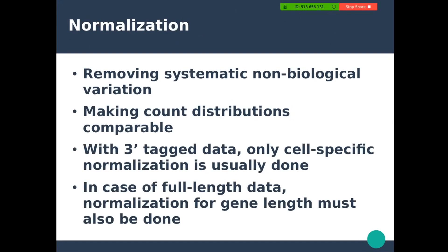In normalization we aim to remove non-biological variation. You can also remove variation that is biological but not interesting from your point of view. The aim is also to make the count distributions comparable between different cells. In single-cell sequencing, usually only between-cells normalization is done. With three-prime tagged data you don't need to do gene length normalization, but if you have full-length data like from Smart-seq2, then gene length must also be taken into account.